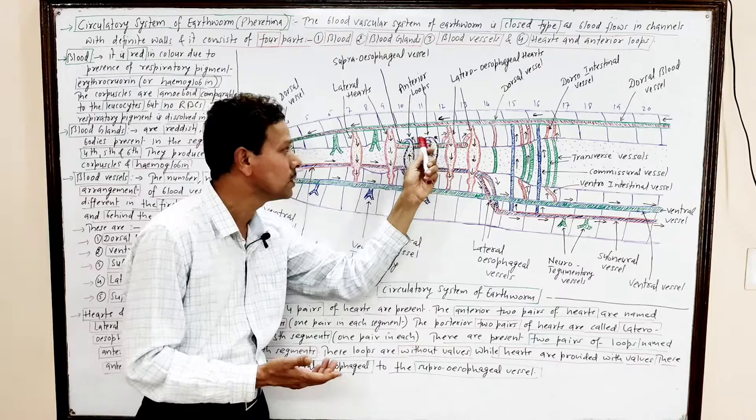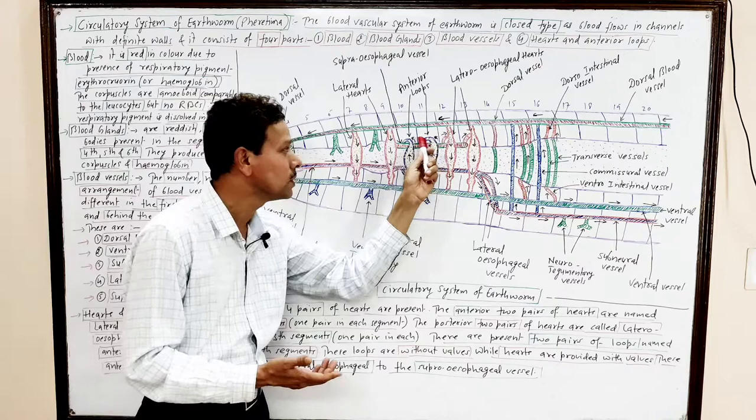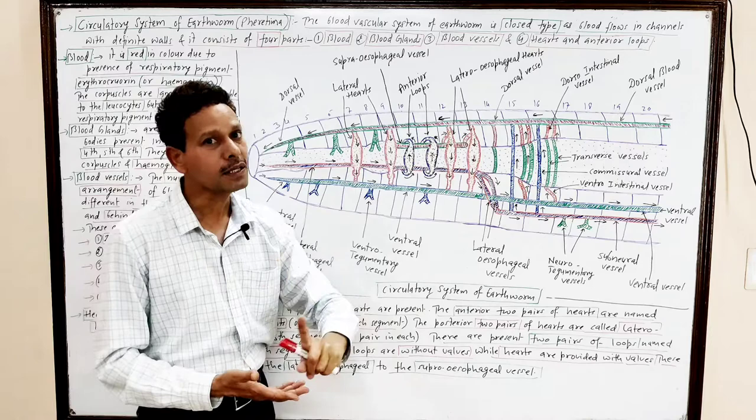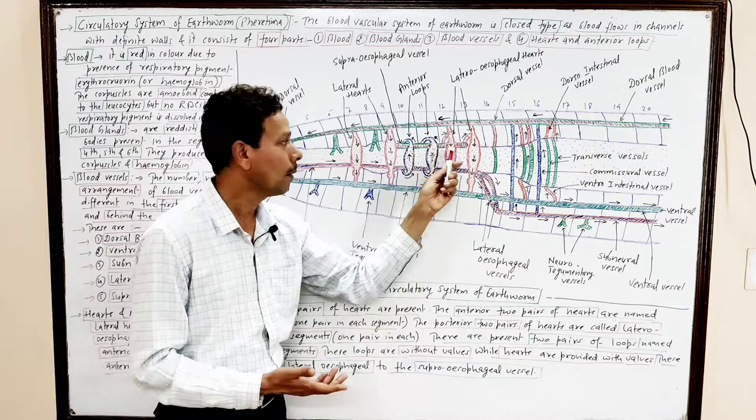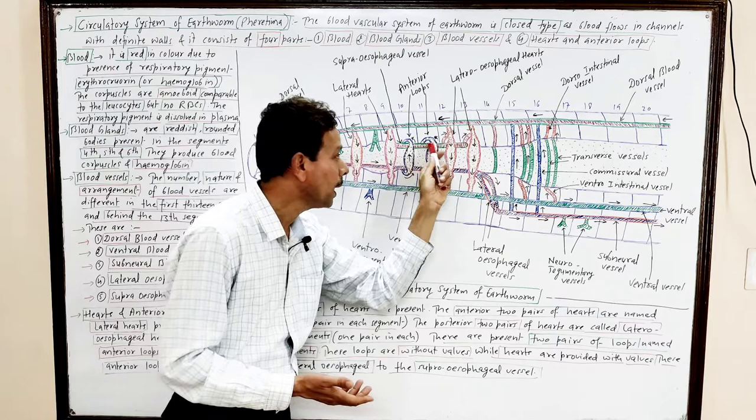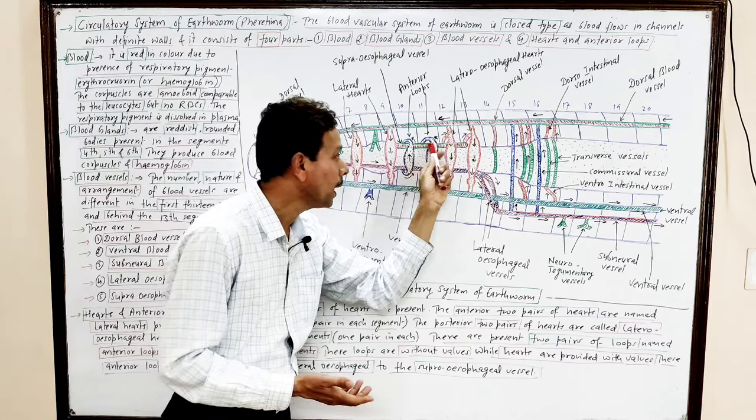In segment numbers 10th and 11th, there are one pair of anterior loops each — these loops carry blood from the lateral esophageal vessel to the supraesophageal blood vessel. In segment numbers 12th and 13th, there are again one pair of hearts each — these are lateral esophageal hearts (posterior hearts), which pump blood from the dorsal blood vessel as well as the supraesophageal blood vessel to the ventral blood vessel.